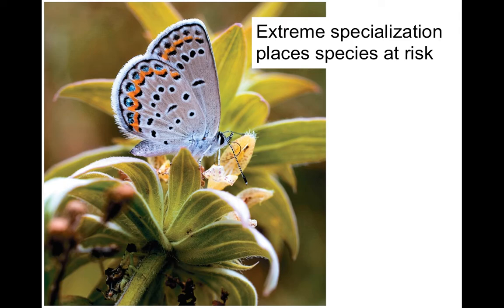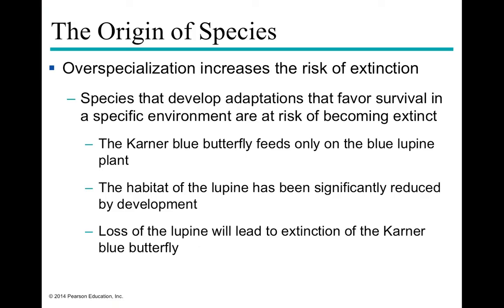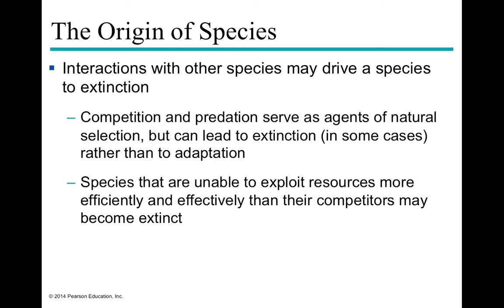Species can also become over-specialized, increasing their extinction risk. The Karner blue butterfly feeds only on the blue lupine plant, so as lupine habitat has been reduced by development, the loss of lupine leads directly to loss of the butterfly — a cascade extinction event. Anytime a species is unable to exploit its resources as efficiently or more efficiently than its competitors, that can lead to extinction. These competitive and predatory forces serve as agents of natural selection.